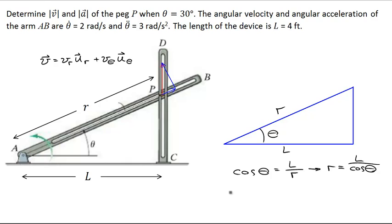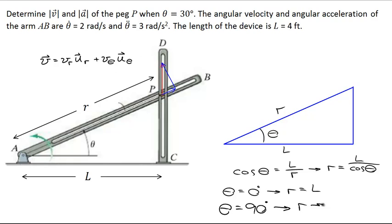Looking at the limits: if theta equals zero degrees, bar AB is horizontal and r simply equals l, which is expected. If theta equals 90 degrees, r approaches infinity — the ball would accelerate upward and its radial position would grow to infinity once the two bars are parallel. You saw this in the simulation: the ball began to accelerate rapidly as theta approached 90 degrees.